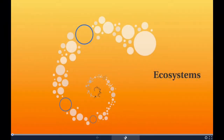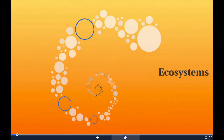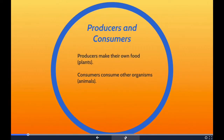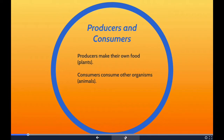Let's take a look at some ecosystems. First we will start with producers and consumers. Producers are organisms that make their own food — they're also known as autotrophs. They get energy from chemicals or the sun, and with the help of water, convert that energy into usable energy in the form of sugar.